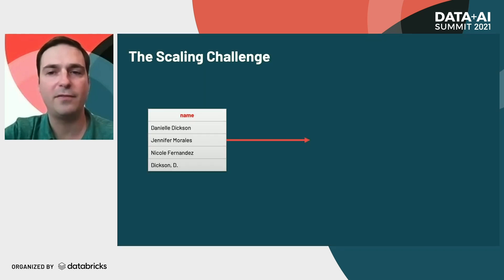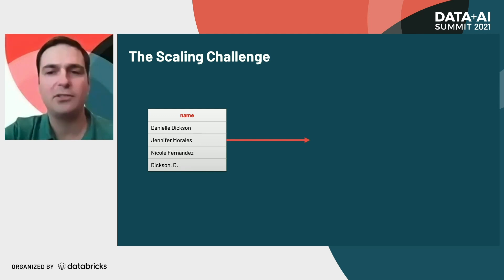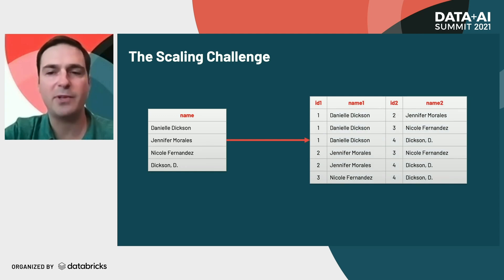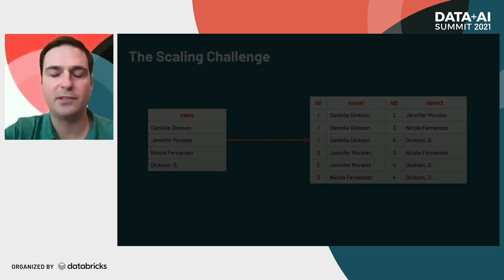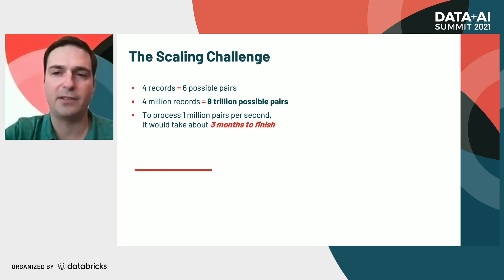The first challenge to tackle is the complexity. The entire set of data we need isn't the single records in our data — it's all the pairs of records. As you can see here, we start with four records. And if we're trying to naively compare each record to the other, then we end up with six comparisons to make. If we added one record, we would be adding four comparisons, add another record, and we add five comparisons, and so on. So if you have four records, there are six possible pairs. But with 4 million records, we're up to 8 trillion possible pairs of records.